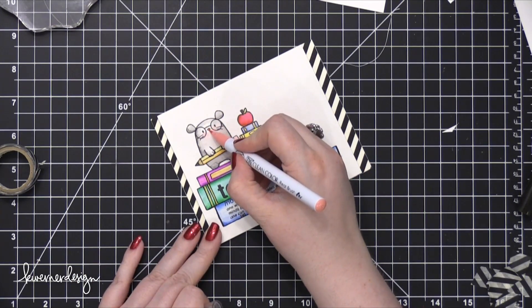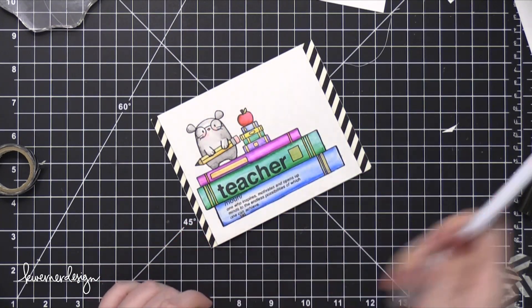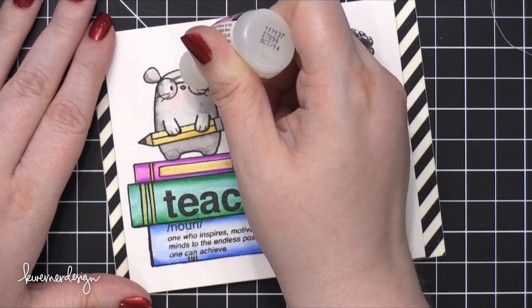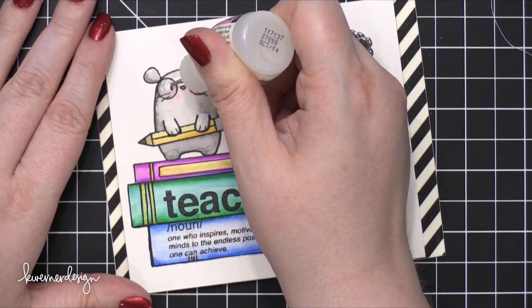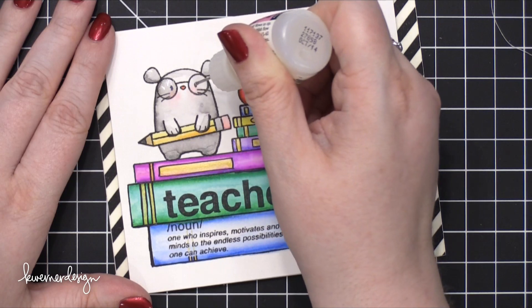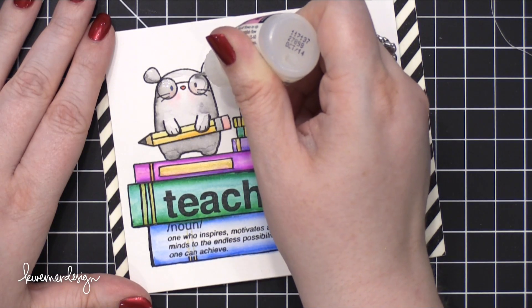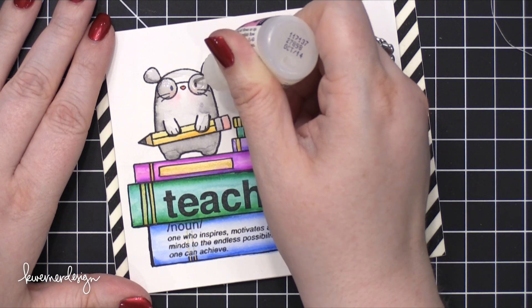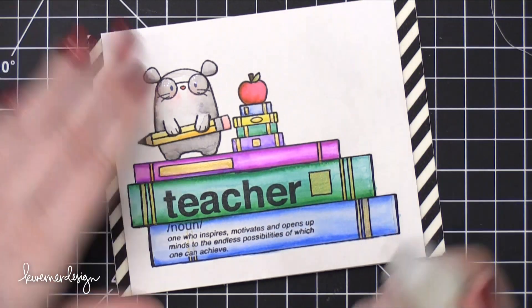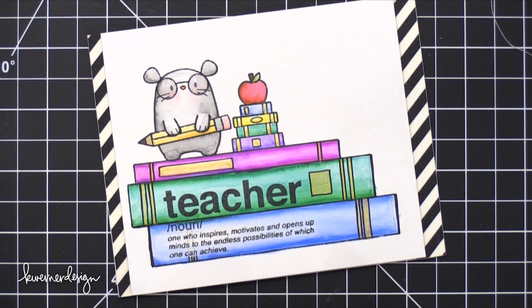So I put some foam adhesive on the back of my watercolor piece, and then adhered that down onto the card a little bit asymmetrically, so there were more of those diagonal stripes on the right than on the left. Then I used some Ranger Glossy Accents to add some shine to the glasses on the mouse, and that finishes up the card for today. I hope you guys enjoyed.